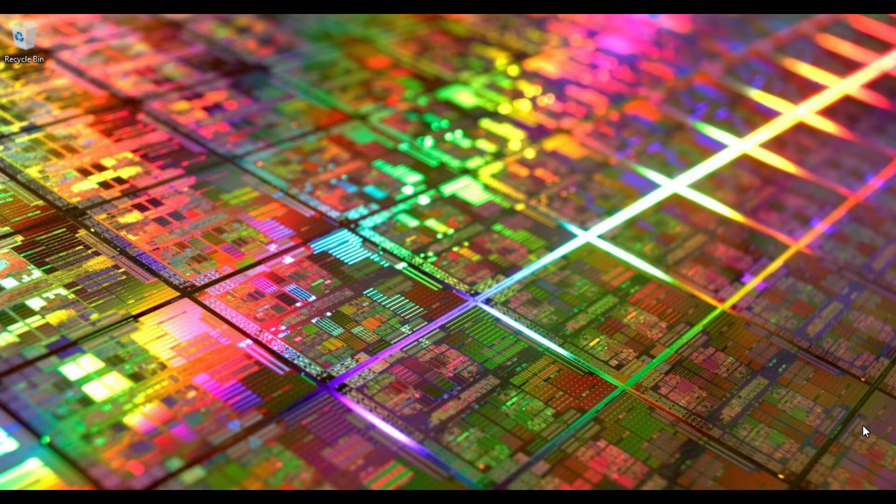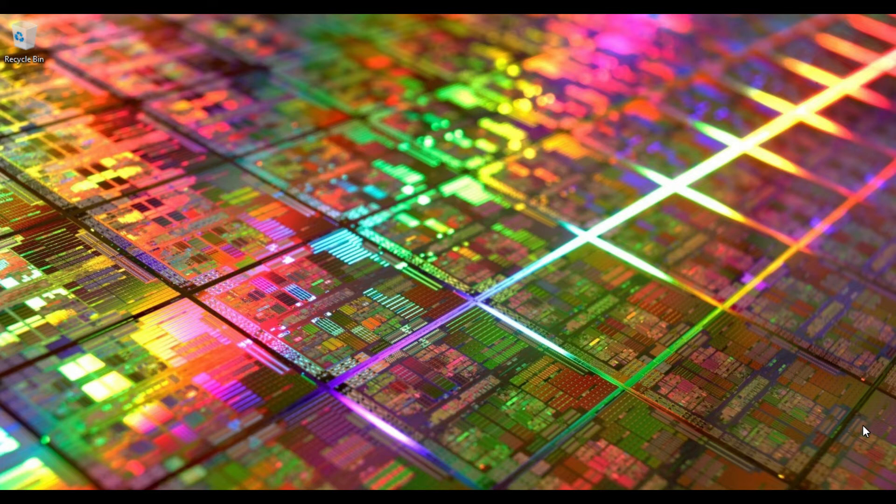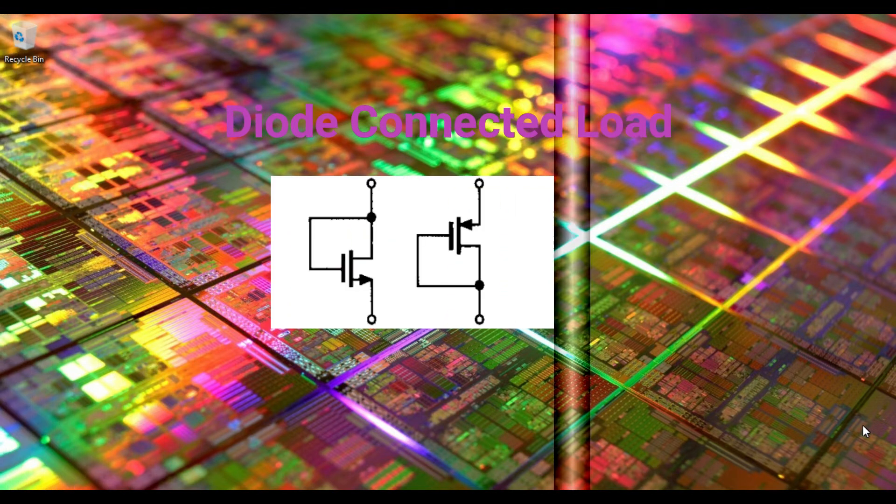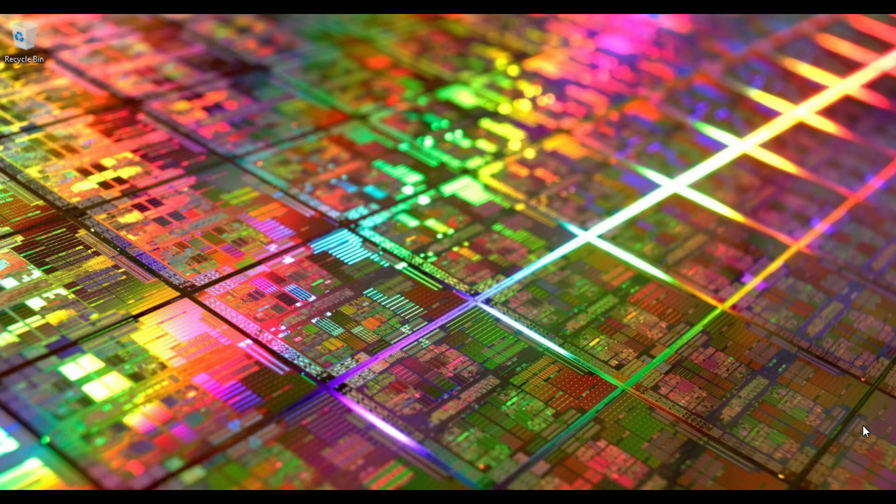In the previous video we have seen CS amplifier with the current source load, but the problem with the current source load is that it needs a bias and it's very difficult to supply that bias. Normally, how can we solve this problem? We can solve this problem by using a diode connected load. A diode connected load is always in the saturation region, so there is no question of keeping it in saturation region or biasing it.